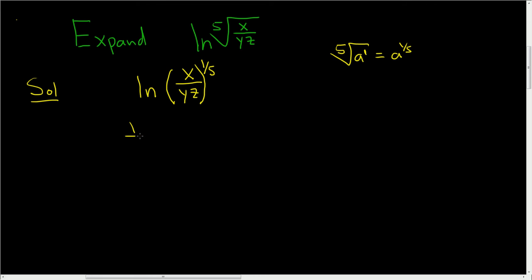Now we can bring the one-fifth downstairs using the power rule. So this is the natural log of x over yz. So this will be equal to one-fifth. Now we'll use the quotient rule because we have a quotient. Now we have to have parentheses here, so ln x minus ln yz.